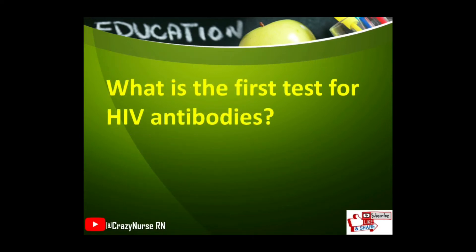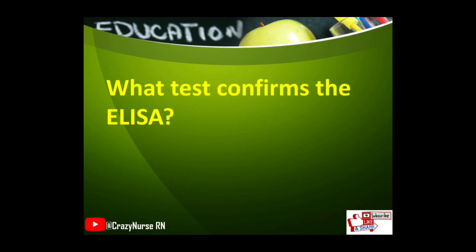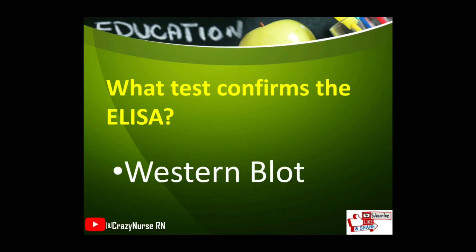What is the first test for HIV antibodies? ELISA. What test confirms the ELISA? Western blot.